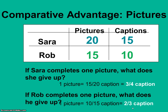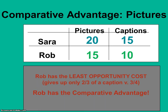Now we can make comparisons. Sarah gives up 3/4 of a caption every time she crops a picture, and Rob gives up 2/3 of a caption every time he crops a picture. Rob has the lower opportunity cost per picture cropped, so Rob has the comparative advantage in picture cropping. If Sarah and Rob are working together, Rob has the comparative advantage in picture cropping because he gives up less per picture cropped than Sarah does in terms of writing captions.